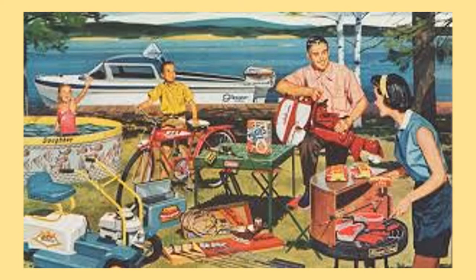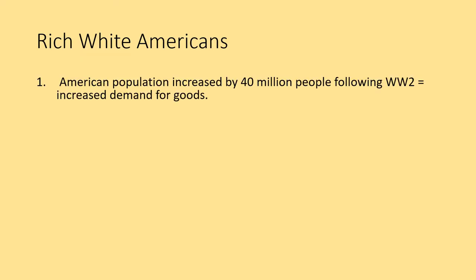Next we look at the experience of rich white Americans during the 50s. This image is full of American dream imagery — owning a speed boat, golf clubs, a ride-on lawnmower — the idea that if you work hard, all of this can be yours. The complete opposite of this picture is essentially communism. Americans had a really tough time economically through the 30s with the Great Depression and the 40s with the Second World War.